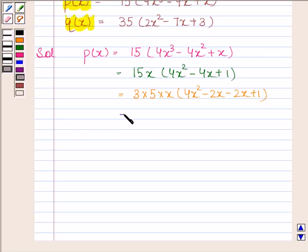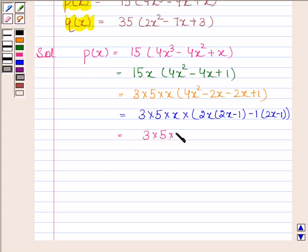This is equal to 3 into 5 into x into 2x minus 1 minus 1 into 2x minus 1. This is equal to 3 into 5 into x into 2x minus 1 into 2x minus 1.